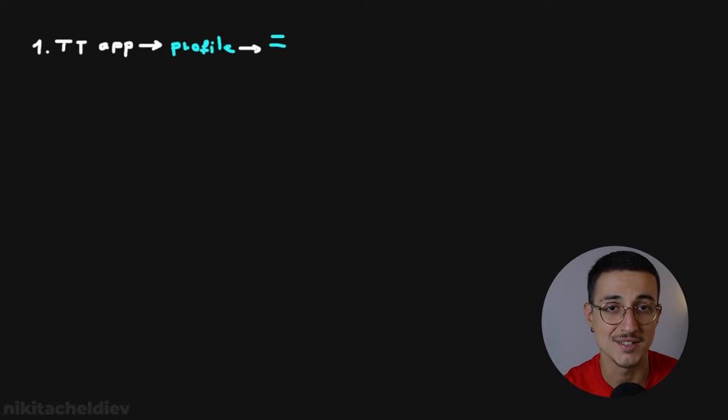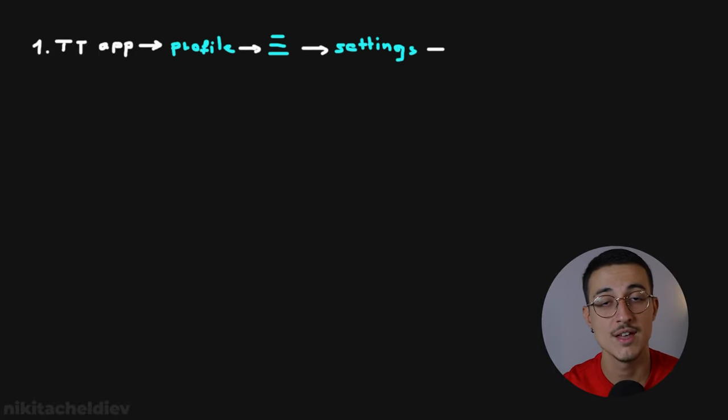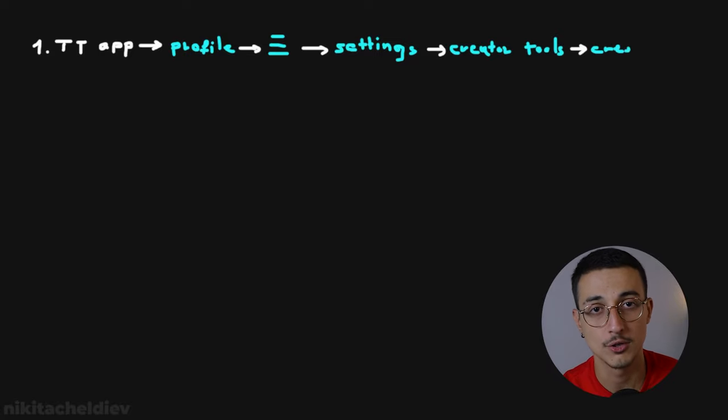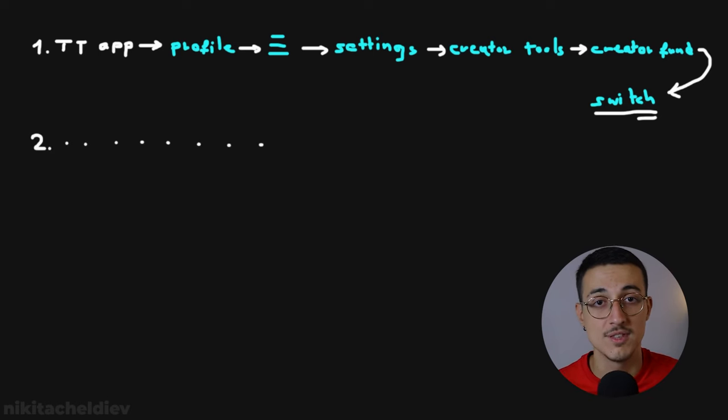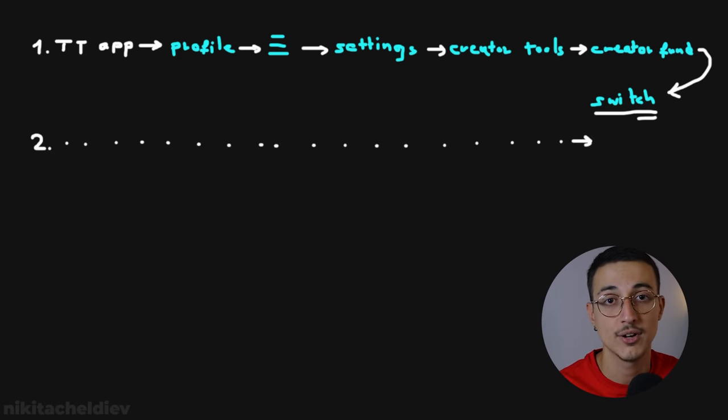There are two ways to join. If you're already in the Creator Fund, go to the TikTok app and tap Profile, then go to the menu and then Settings, tap Creator Tools and then Creator Fund, and there will be an option to switch at the bottom of the page — and now you're in the Creativity Program. If you're not in the Creator Fund, you do the same thing, but instead of tapping Creator Fund, you tap Creativity Program. You will be notified if your application is accepted within three days. But remember, if you join the Creativity Program, you cannot switch back to the Creator Fund.